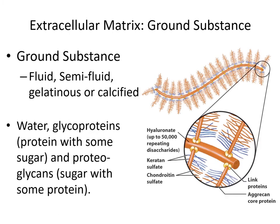The ground substance of the extracellular matrix is often gelatinous, made up of a mixture of protein and sugar. Glycoproteins are mostly protein with a bit of sugar — the backbone is a chain of amino acids with sugars attached. Proteoglycans are the opposite: mostly sugar with a bit of protein. You can see here that a proteoglycan is a very large molecule. Down the middle, the backbone is made of sugar, and hanging off that sugar backbone are chains of amino acids.